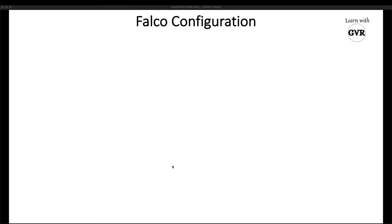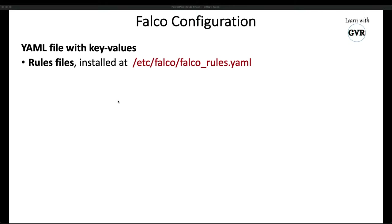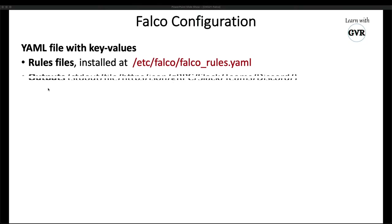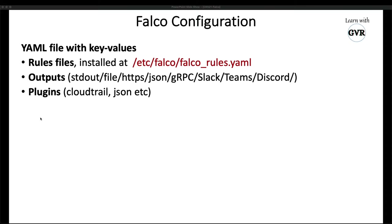The three things to remember in Falco configuration are: configuration, rules, and output. The Falco configuration is a simple YAML file which has rules and outputs. Apart from rules and outputs, it also has plugins — for example, notifying Falco security events to CloudTrail or JSON. It also supports event sources like Kubernetes audit events, so not only pods but also Kubernetes audit events can be captured.